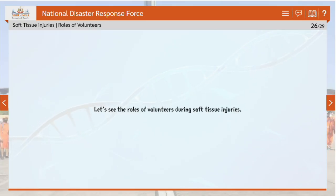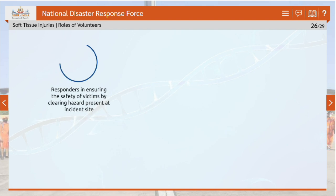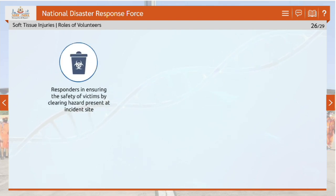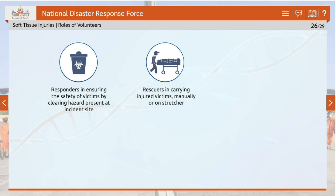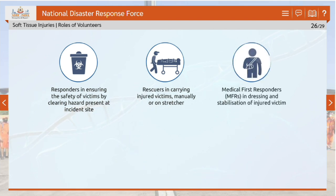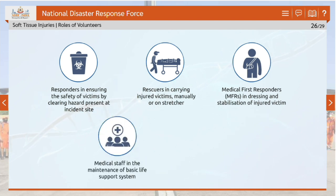Let's see the roles of volunteers during soft tissue injuries. Volunteers can help responders ensure the safety of victims by clearing hazards at the incident site, assist rescuers in carrying injured victims manually or on a stretcher, support medical first responders (MFRs) in dressing and stabilization of injured victims, and help medical staff in the maintenance of basic life support systems.